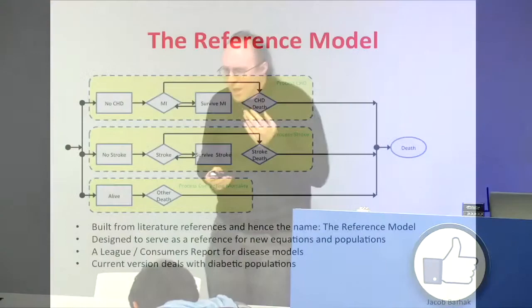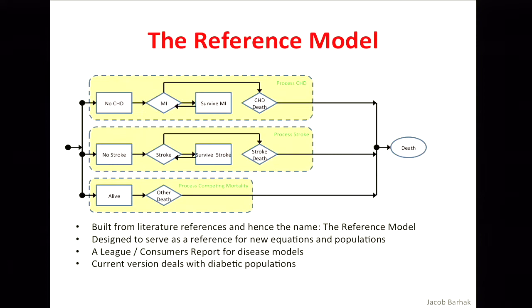Today there is an effort to generalize this and extend it to work on other populations, and the reference model is one of these attempts. This is the current version of the reference model — it's still very simple and currently aimed at diabetic populations, though it can be extended. You can see three disease processes: heart attack is the first, stroke is the second, and competing mortality is the third — because people can die from getting hit by a bus and not necessarily from disease.